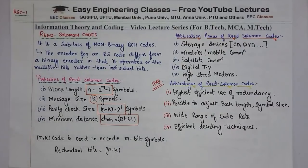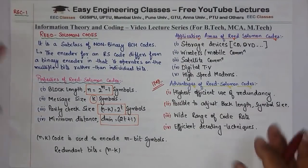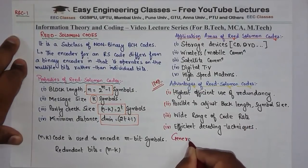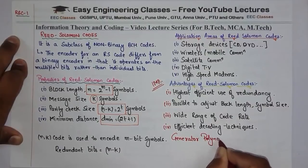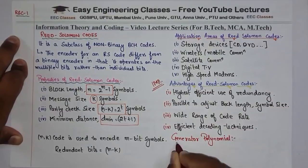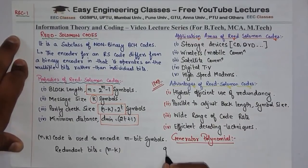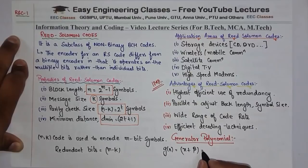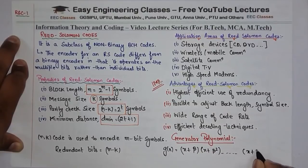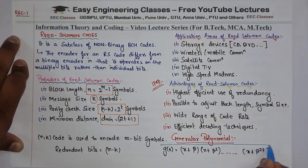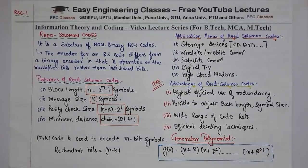So this is the basic theory of Reed Solomon Codes. Now we will see the generator polynomial of a Reed Solomon Code. The generator polynomial G(X) is given by: G(X) = (X + β)(X + β²)...(X + β^{2t}), where t is the error-correcting capability of the code. So this is the generator polynomial of Reed Solomon Codes.